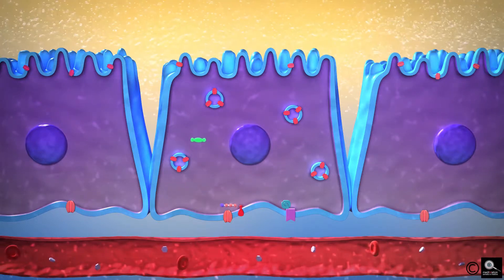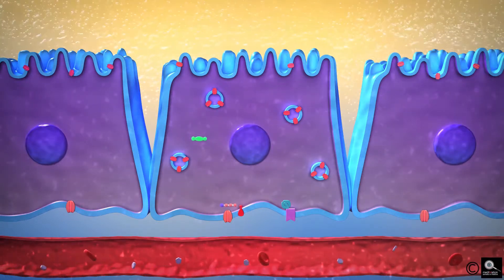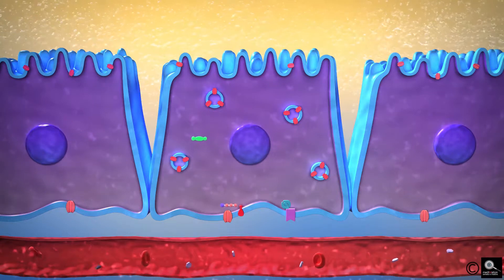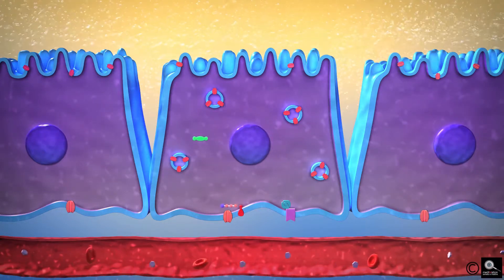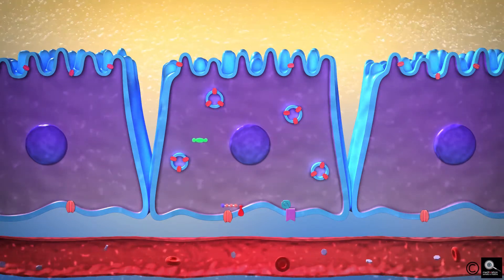In the absence of ADH, the permeability of these cells to water is almost zero. Thus, in the absence of ADH, the kidneys excrete extremely dilute urine.